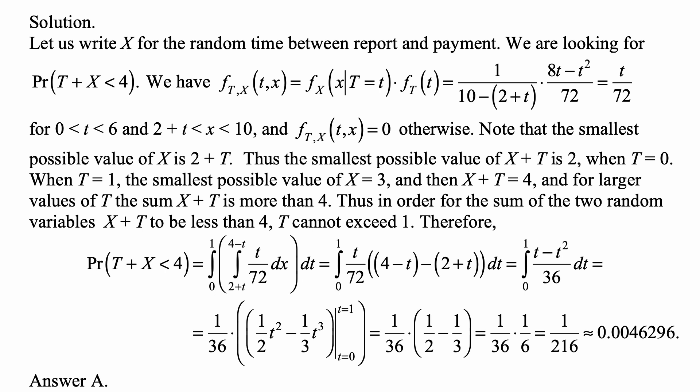But it has to be more than 2+t because that's the condition on x that is given in the problem. So this becomes simply the integral from 2+t to 4-t of t/72 dx, and then the integral with respect to t. Notice that because t cannot exceed 1,